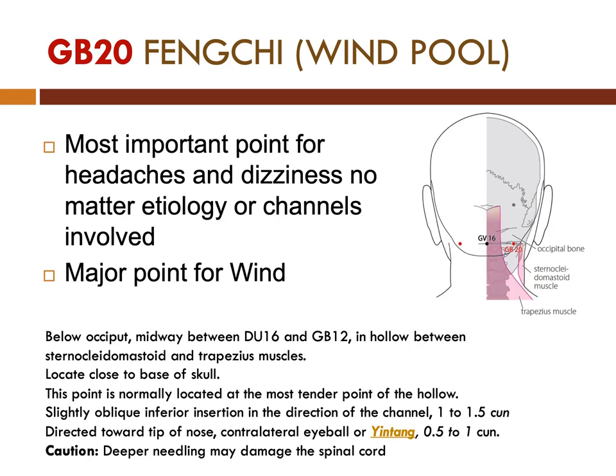This point is normally located at the most tender point of the hollow. It is punctured obliquely, inferiorly, in the direction of the channel, 1 to 1.5 cun. Directed toward the tip of the nose, contralateral to the eyeball or Yintang, 0.5 to 1 cun. Caution should be observed in deeper needling as it may damage the spinal cord.